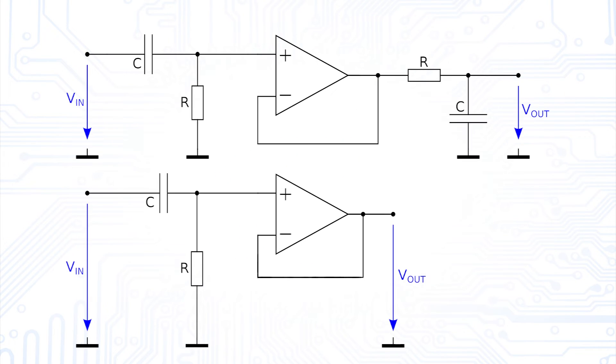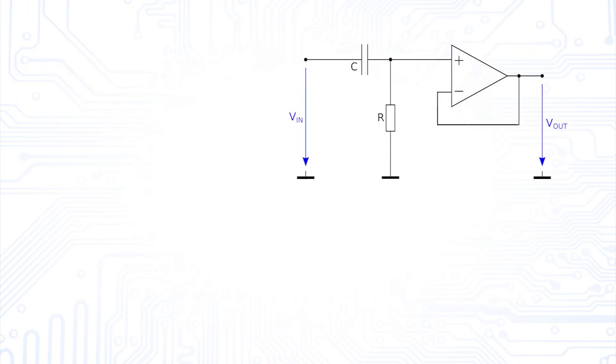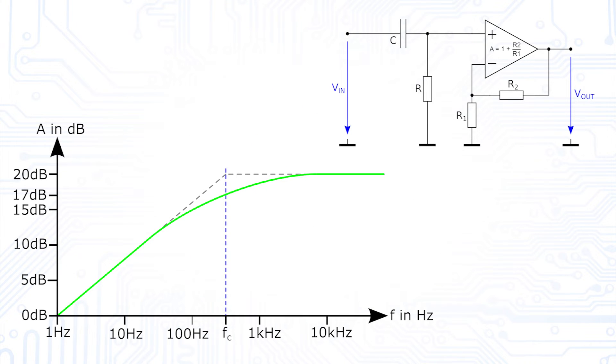Again, we are basically doing nothing different than adding an operational amplifier to our familiar RC circuits. For the first-order high-pass filter, the gain increases with 20 dB per decade until the cutoff frequency is reached, above which we get our constant gain.